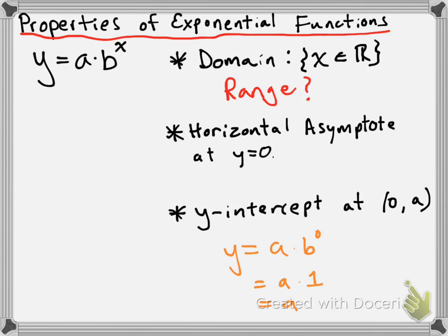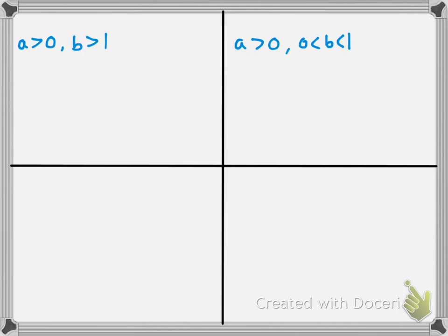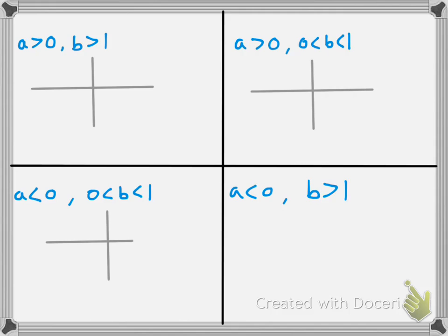Now let's talk about the range. There are four different possibilities because we can have different a values and different b values. We'll cover: a greater than 0 with b greater than 1; a greater than 0 with b between 0 and 1; a less than 0 with b between 0 and 1; and a less than 0 with b greater than 1.